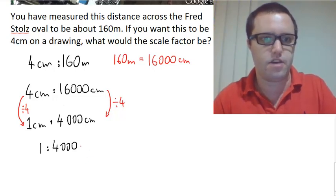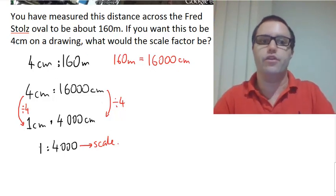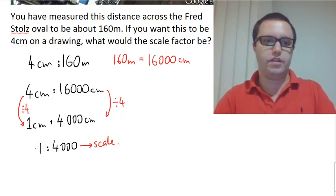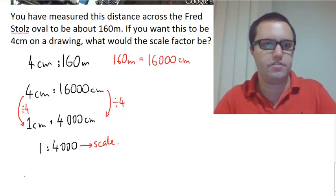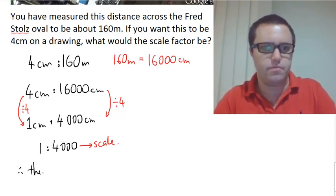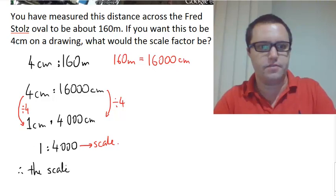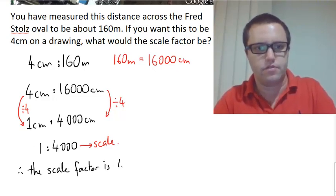That means that our scale is going to be 1 is to 4,000. This is our scale. When we're looking for scale factor, we know that if one of our numbers is a 1, like this one here is, then the other is our scale factor.